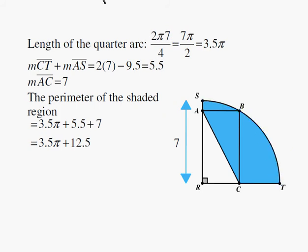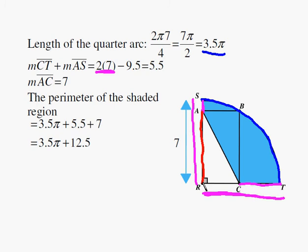So let's erase all that for one second. I'm going to highlight it so that we can follow what's going on. I'm going to take pink. Now I'm interested in this length, this plus this, which I'm calling here measure of line segment CT plus measure of line segment AS. Now, I know that this whole thing is 7 times 2 because the radius is 7. I also know that the length of the rectangle plus the width of the rectangle is 9.5. If I subtract 9.5 from 14, I get 5.5. So that's really the purple length.